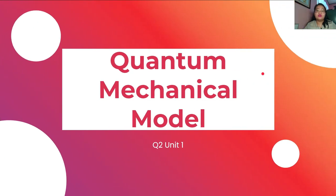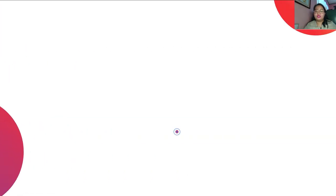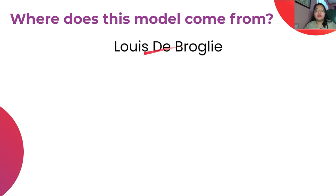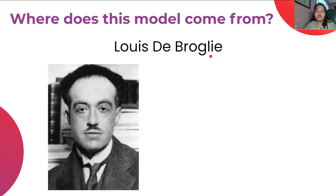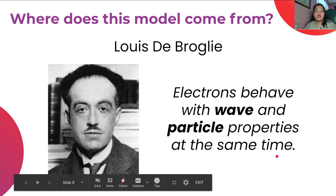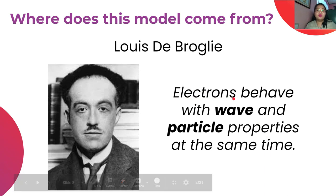The latest atomic model is the quantum mechanical model. Three scientists contributed their ideas to come up with this model. First is Louis de Broglie, who said that electrons behave with both wave and particle properties at the same time — they can be considered both a wave and a particle, with movement like a wave, while also having particle properties like protons and neutrons.